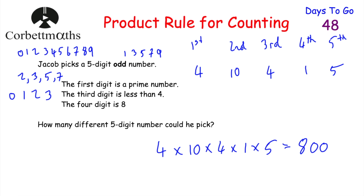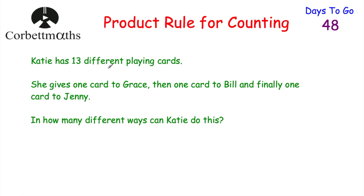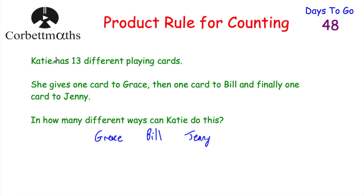Our next question: Katie has 13 different playing cards — perhaps ace up to king — and she's going to give one card to Grace, then one card to Bill, and then one card to Jenny. In how many different ways can Katie do this? Feel free to press pause and work out how many different ways Katie could give one card to Grace, then one of the remaining cards to Bill, and then one of the remaining cards to Jenny.